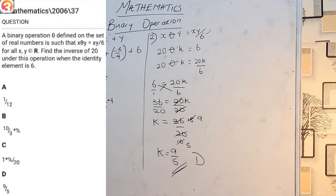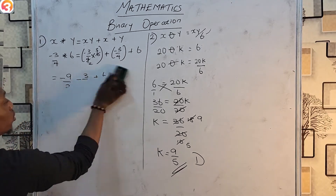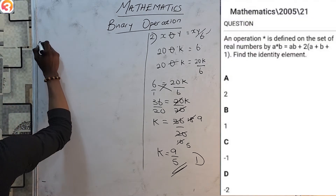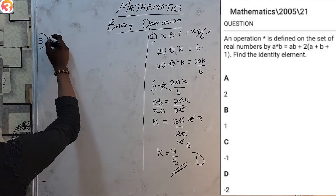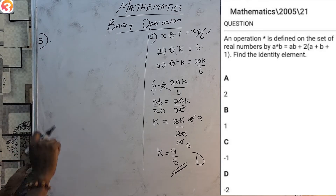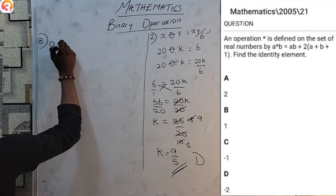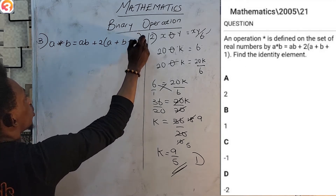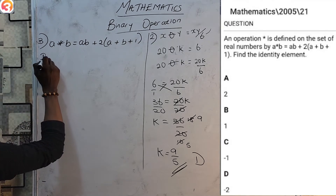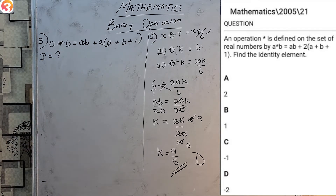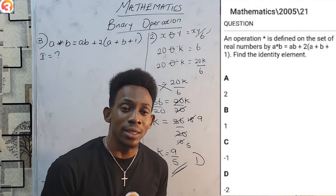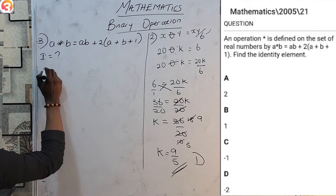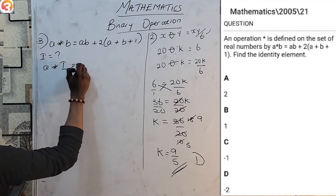That leads us to question three from 2005, question number 21. An operation asterisk is defined on the set of real numbers by a★b = ab + 2(a + b) + 1. We have been asked to find the identity element. We know that if a operates on identity element i, the answer should still be a. So substituting b = i into the formula gives: ai + 2a + 2i + 2.